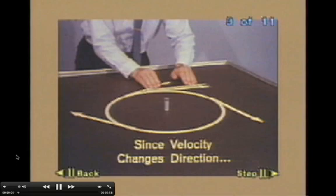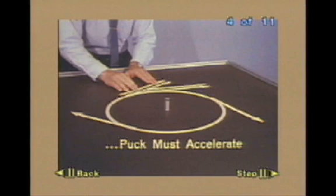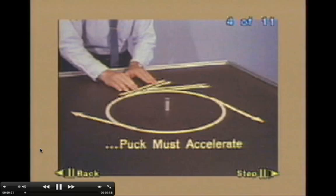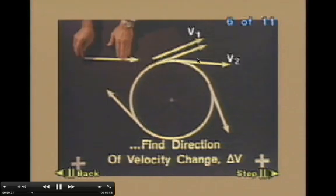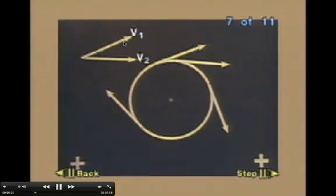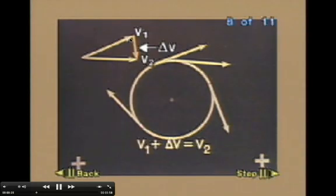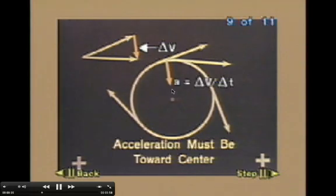An object in uniform circular motion is always changing direction. Therefore, its velocity vector must always be changing direction, and the object must be accelerating. But what direction is that object accelerating in? To find out, we will take a look at two velocity vectors at two places on a circular path. By looking at these two velocity vectors, we can see the change in velocity caused by the change in their direction. That change in velocity vector points in the same direction as the acceleration of the object in uniform circular motion, which as you can see is toward the center of the circle.